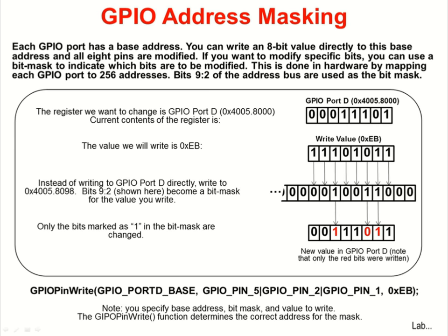On the Tiva C-Series parts, each port has 256 possible addresses covering every possible combination of the port pins. The GPIO port pin write API uses the pin mask and the base address to form the address that allows us to write to the specific pins we desire — in this case, pins 1, 2, and 5. We can then write or read from these pins only. This is not a software masking trick; this technique is completely implemented in the GPIO hardware.